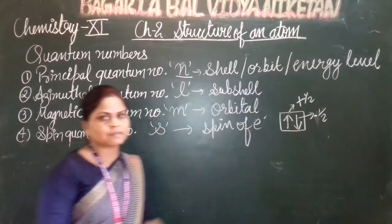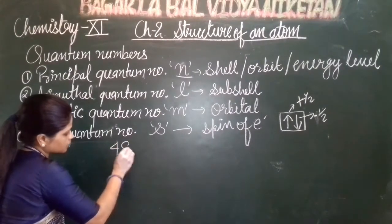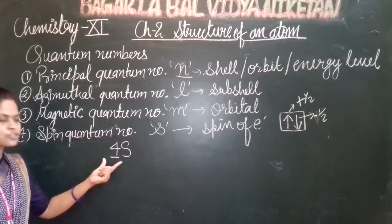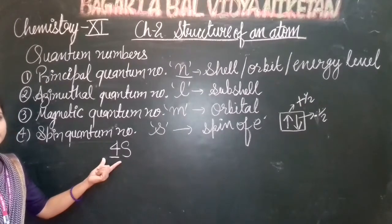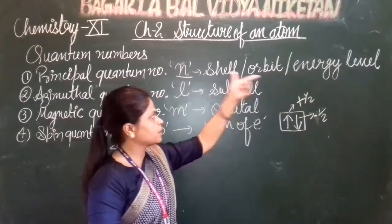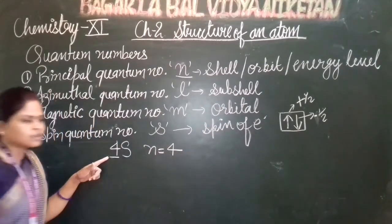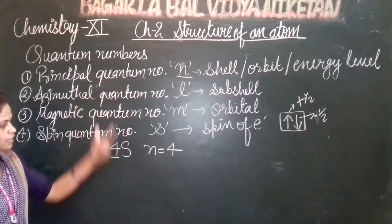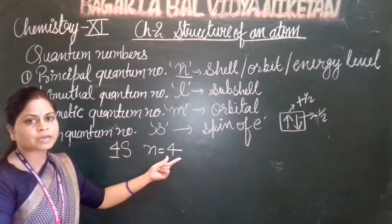For example, consider the sub-shell 4s. The number written before the sub-shell letter is the principal quantum number n. So for 4s, n equals 4. This is the shell number, energy level, or orbit. If we are given an orbital's symbol, we can find the principal quantum number directly from it.